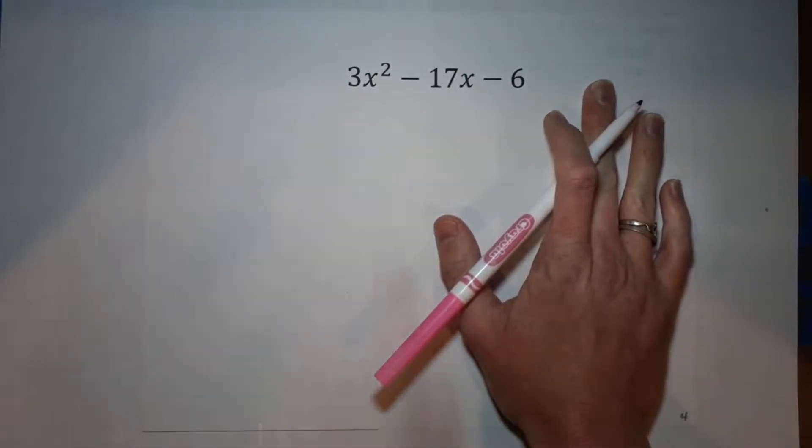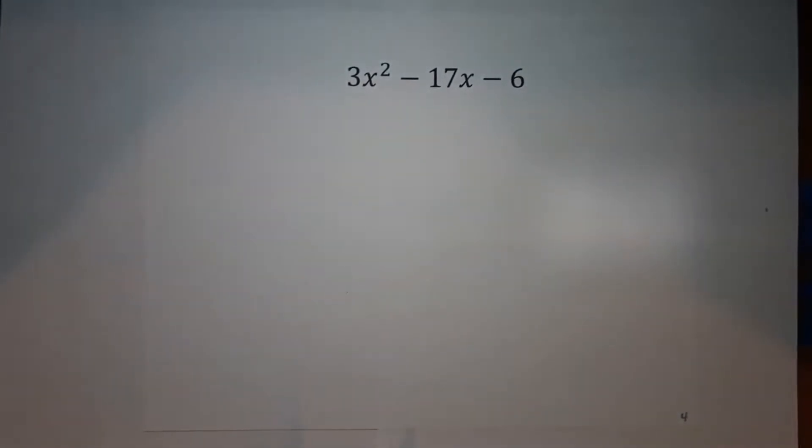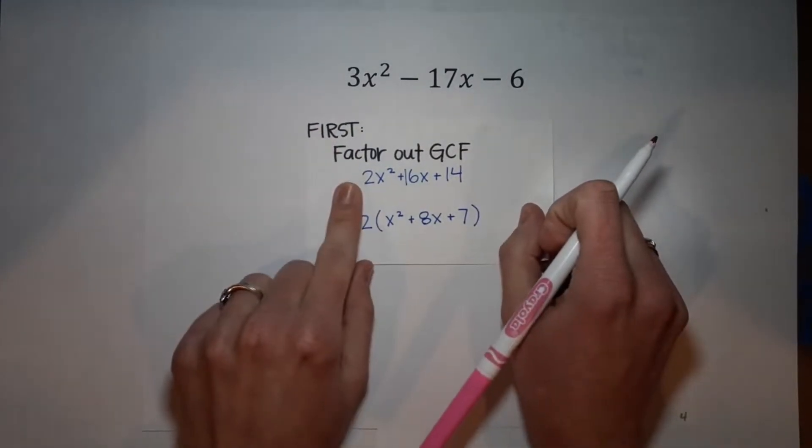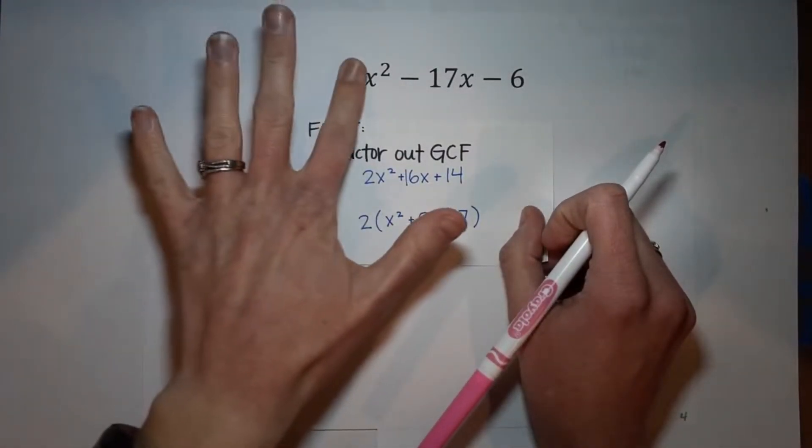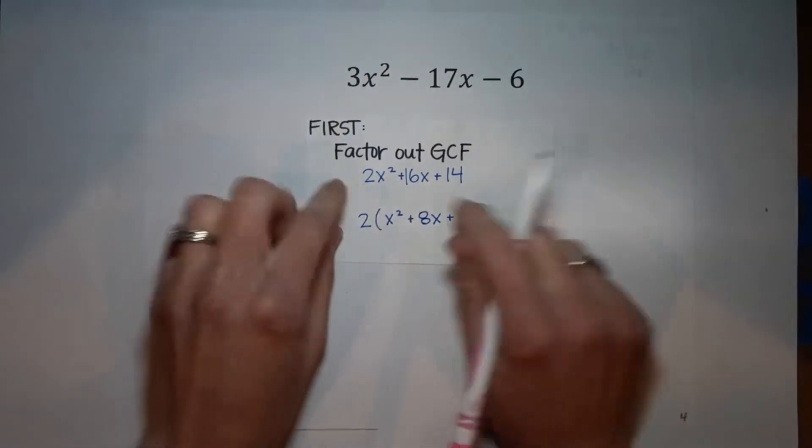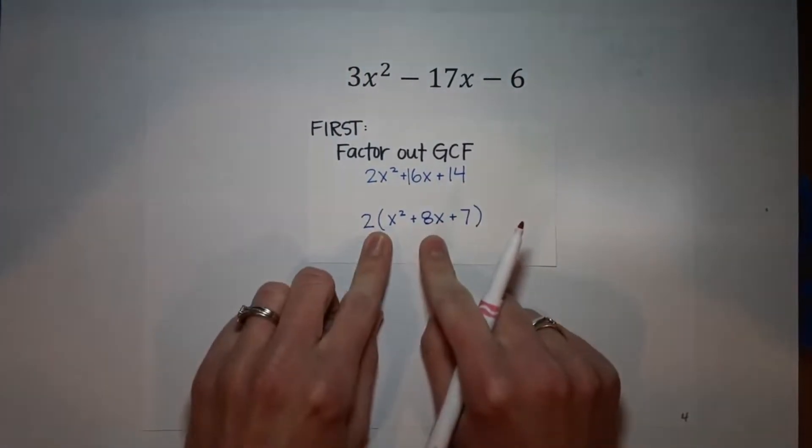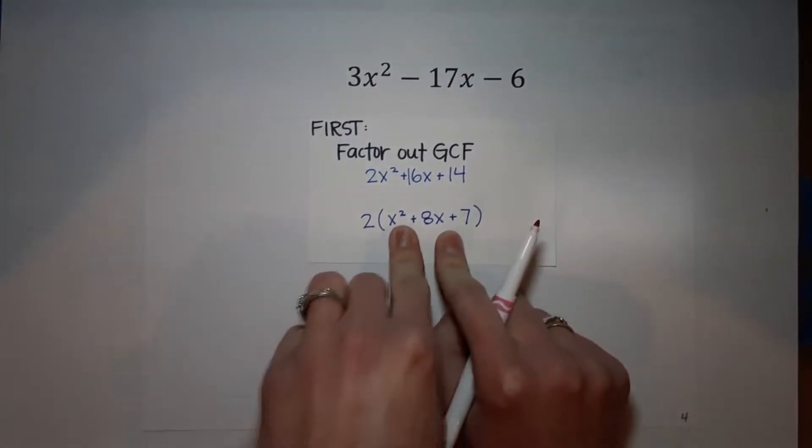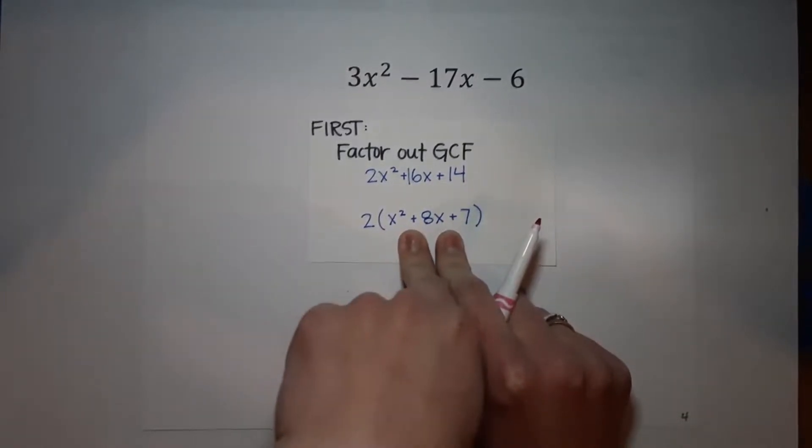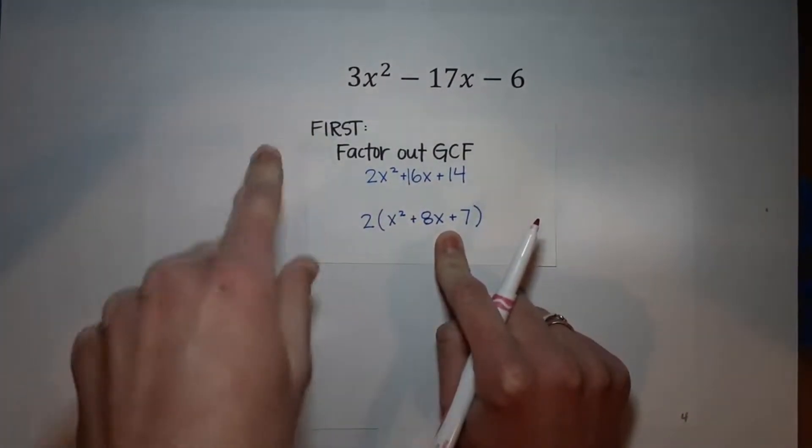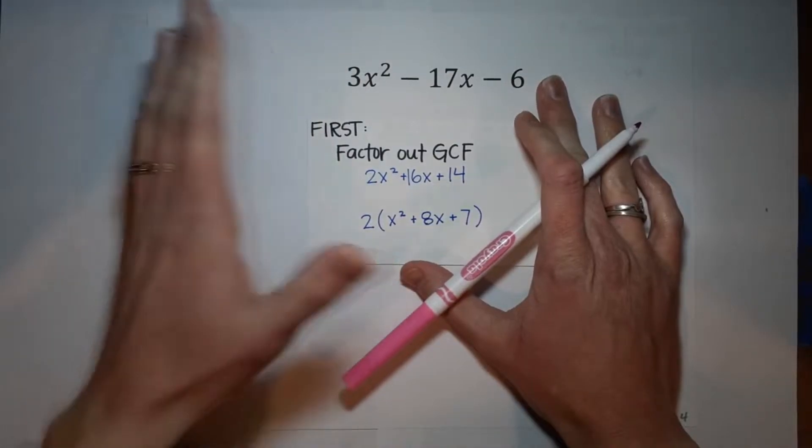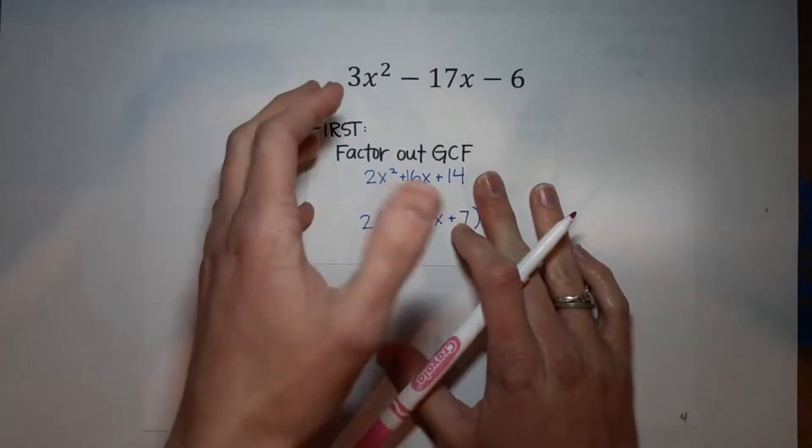How do we factor this when there's a number here? First of all, what you always, always, always want to do: make sure you factor out the GCF if there is one. It could potentially totally take this away. So this one, I noticed they were all even, so I pulled a two out. Then there's not even a number in front of the x squared. But in this example, there is no GCF, there's nothing for me to pull out.